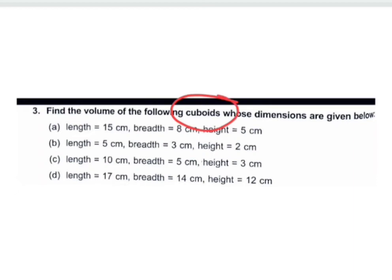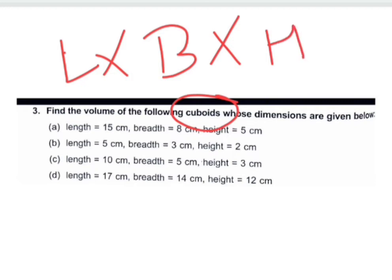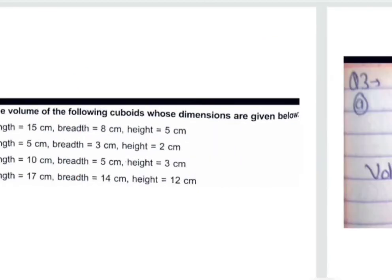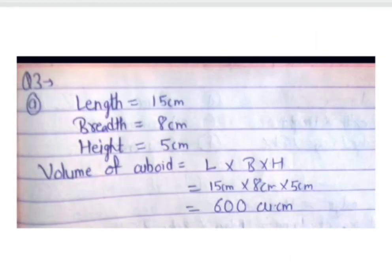Let's move to question number three: find the volume of the cuboid. The volume of a cuboid is length × breadth × height. The dimensions given are lengths, breadths, and heights. We just multiply these three terms to get our answer.